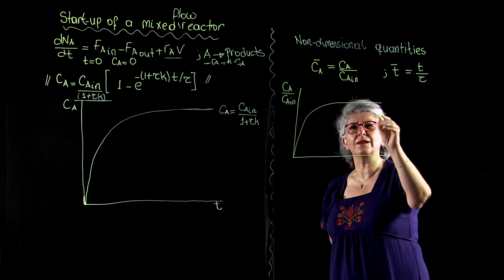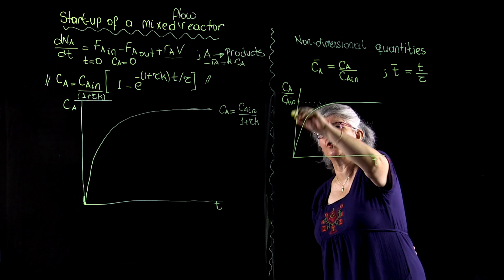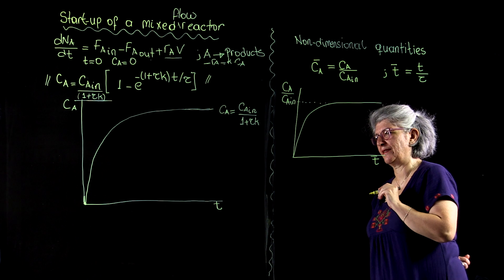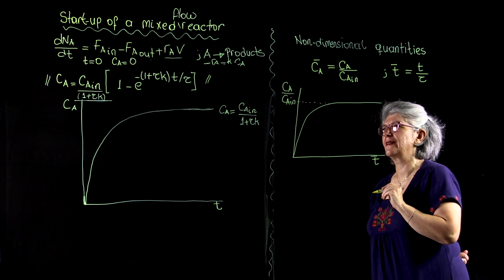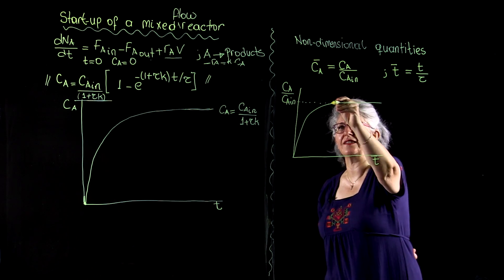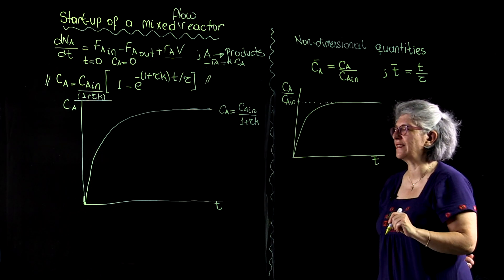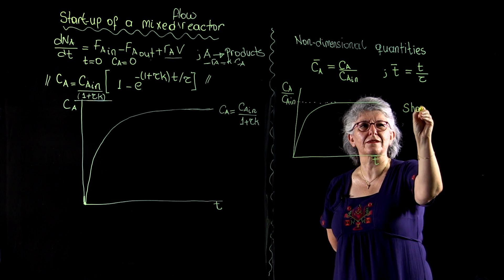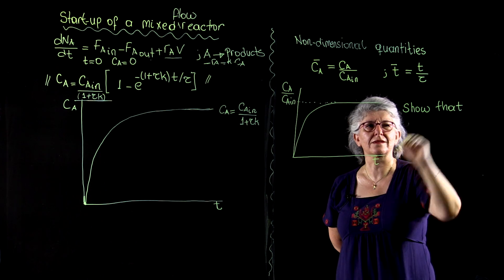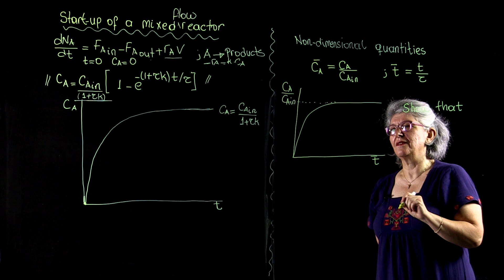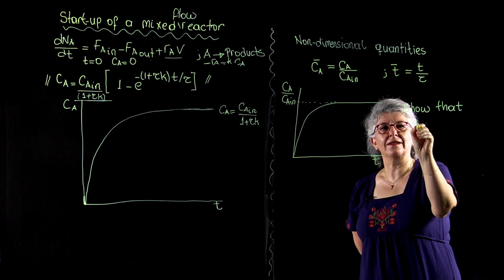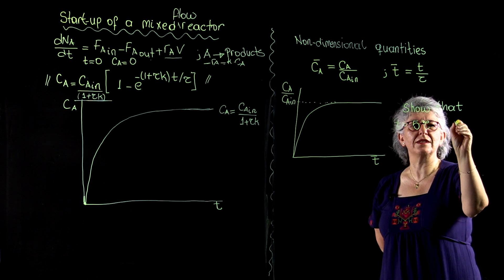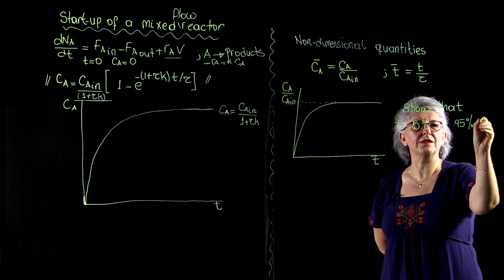So here, the system converges to the steady state concentration, given that the reactor has this spacetime. The exercises that you will have, in addition to generating as many curves as possible, are going to be to show that you need 5 Tau equivalents of time to reach 95% of the steady state concentration.